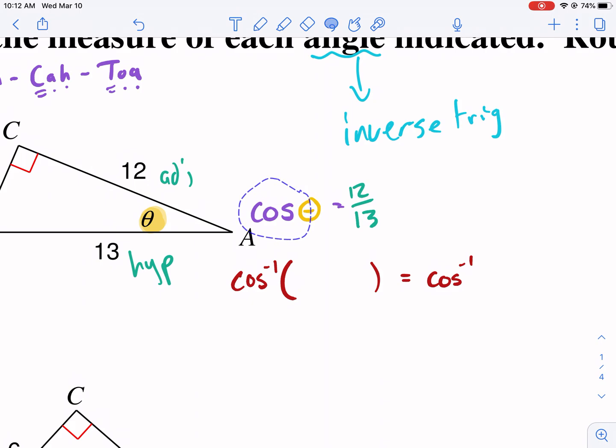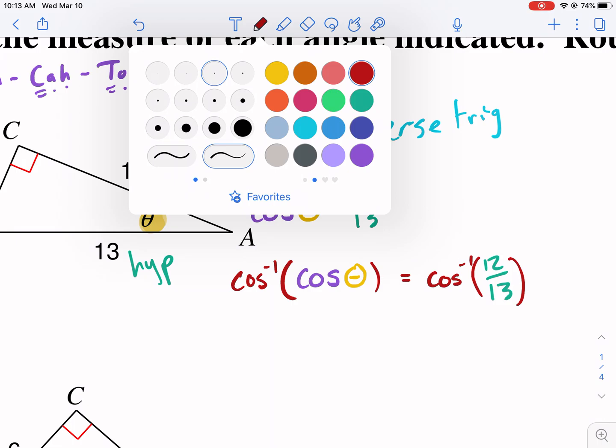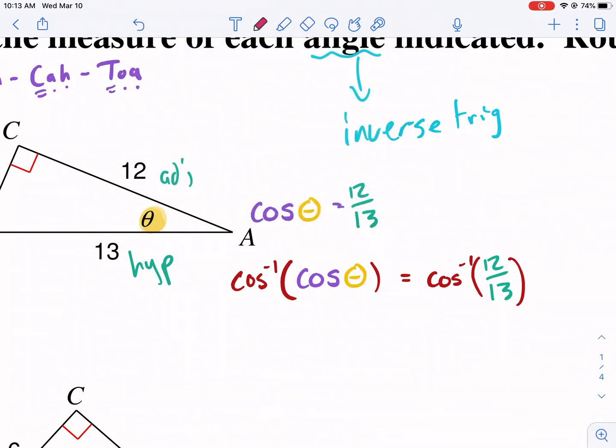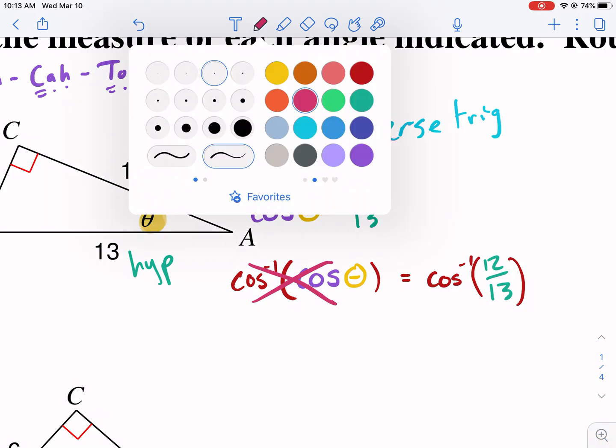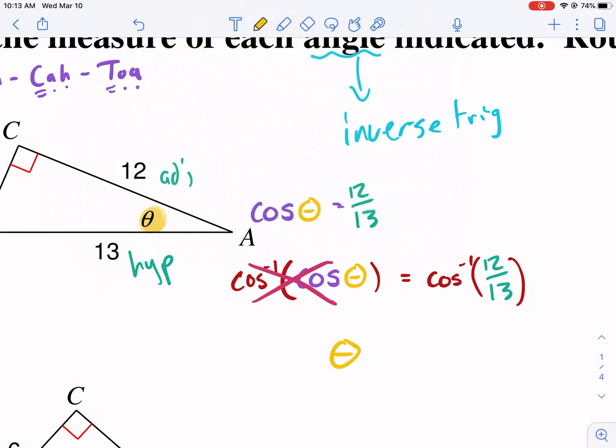So we're going to take the inverse cosine of both of these options. This is where we need a calculator. When we take the inverse cosine of cosine, essentially cancels out. It's the opposite, so it goes away, and we're just left with theta. So theta equals, and now I go to my calculator. Make sure it's in degree mode.